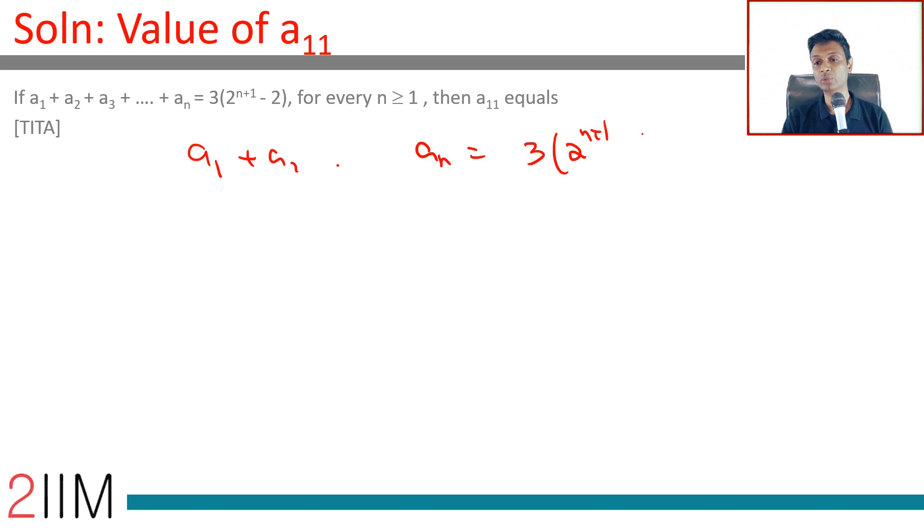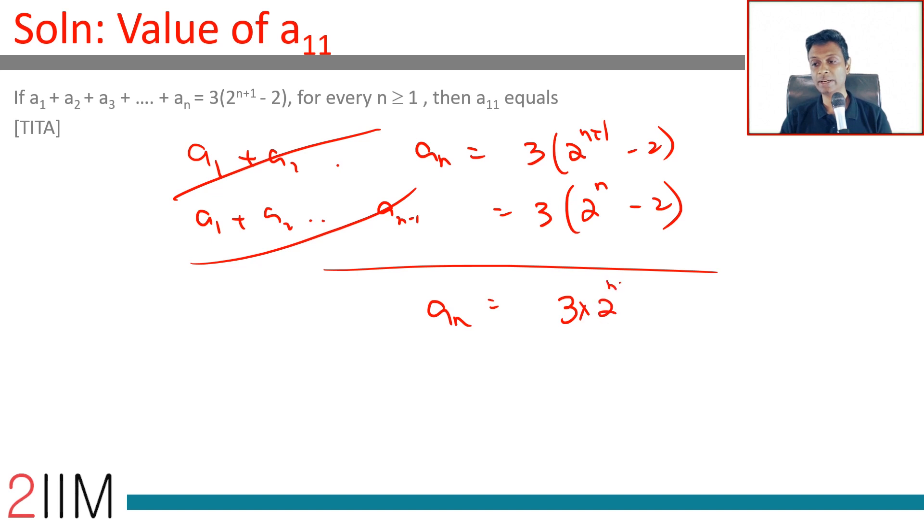Or we can verify: aₙ equals a₁ plus a₂ all the way till aₙ minus a₁ plus a₂ all the way till aₙ₋₁. This is 3 into 2 power n plus 1 minus 2 minus 3 into 2 power n plus 2. This is 3 into 2 power n into 2 minus 1, which is 3 into 2 power n, exactly what we got.